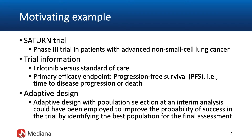Beginning with a motivating example, I will spend a few minutes on this slide because we need to introduce a few key concepts that will play a central role in this module. Today we will discuss another popular class of adaptive designs known as population selection designs. The natural question to ask is what does it mean and why would we have several populations in a single trial? Before I tell you more about the Saturn trial, let me step back and talk about the so-called multi-population trials.